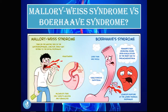Mallory-Weiss syndrome vs. Boerhaave syndrome: In Mallory-Weiss, there are linear tears at the gastroesophageal junction extending to the distal esophagus, the patient presents with hematemesis, and it is an incomplete tear affecting only the mucosa and submucosa. In Boerhaave syndrome, there is a complete, full-thickness rupture of all four esophageal layers. The patient presents with chest pain, shock, subcutaneous emphysema, and Hamman's sign — crunching sounds on auscultation of the heart due to pneumomediastinum.